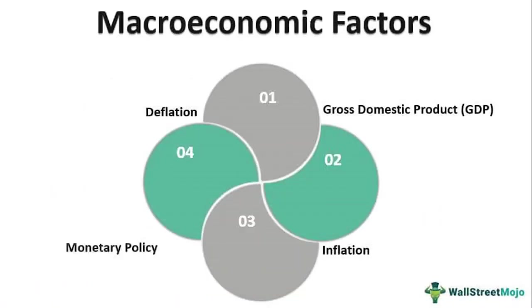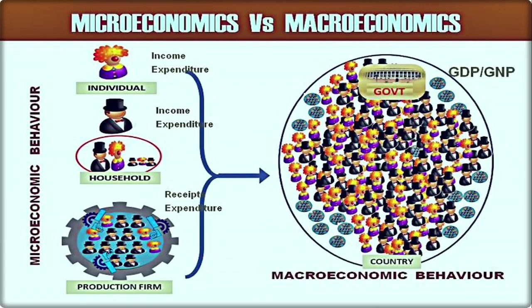Here is the representation of macroeconomics — gross domestic product or GDP, inflation, monetary policy, and deflation. The comparison of microeconomics versus macroeconomics: microeconomics covers individual households and production firms, while macroeconomics involves all of these, including the government.